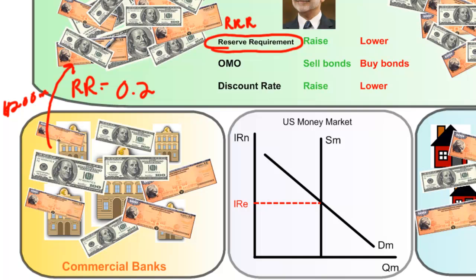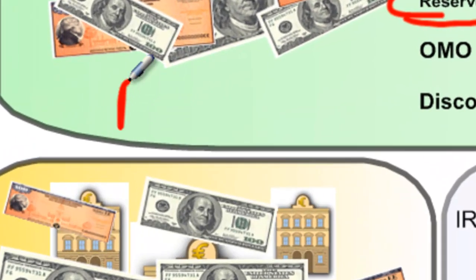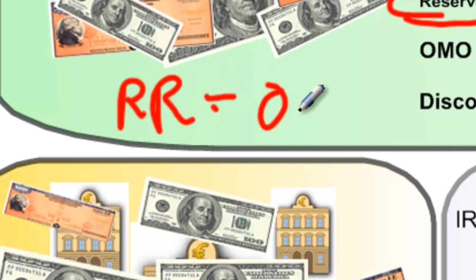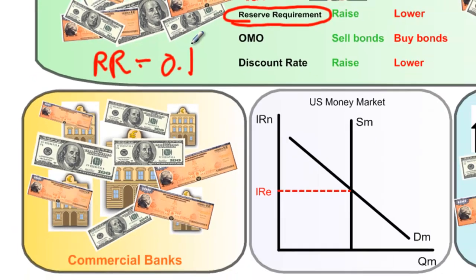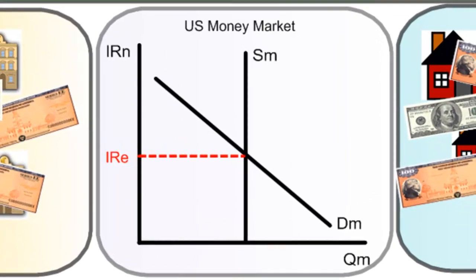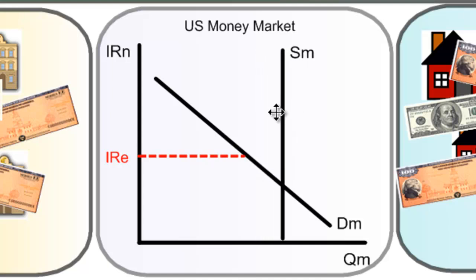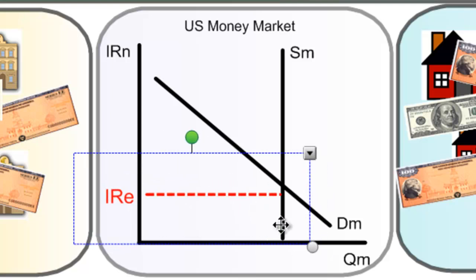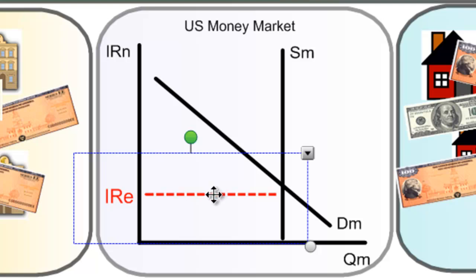What could the Federal Reserve do to the reserve requirement to increase the supply of money? Lowering the reserve requirement — let's say it falls to 0.1 — means commercial banks must keep only 10% of total deposits at the Fed. If the reserve requirement decreases, this frees up reserves from the Fed and brings them back into the banking system. Decreasing the reserve requirement means that commercial banks can lend out a greater proportion of their total reserves, which leads to an increase in the supply of money and a decrease in the equilibrium interest rate. This would be considered an expansionary monetary policy.